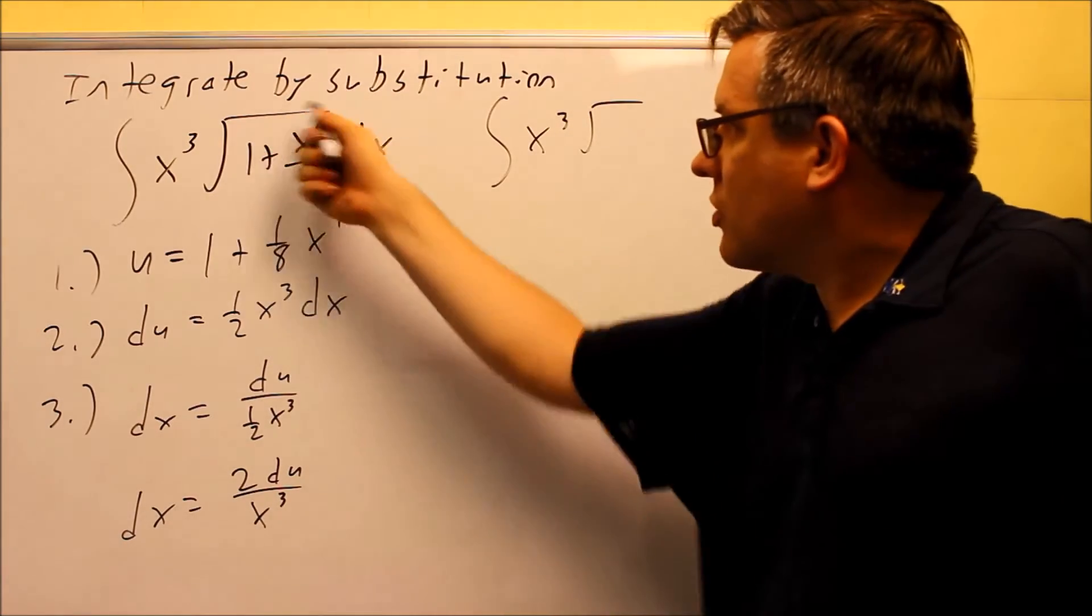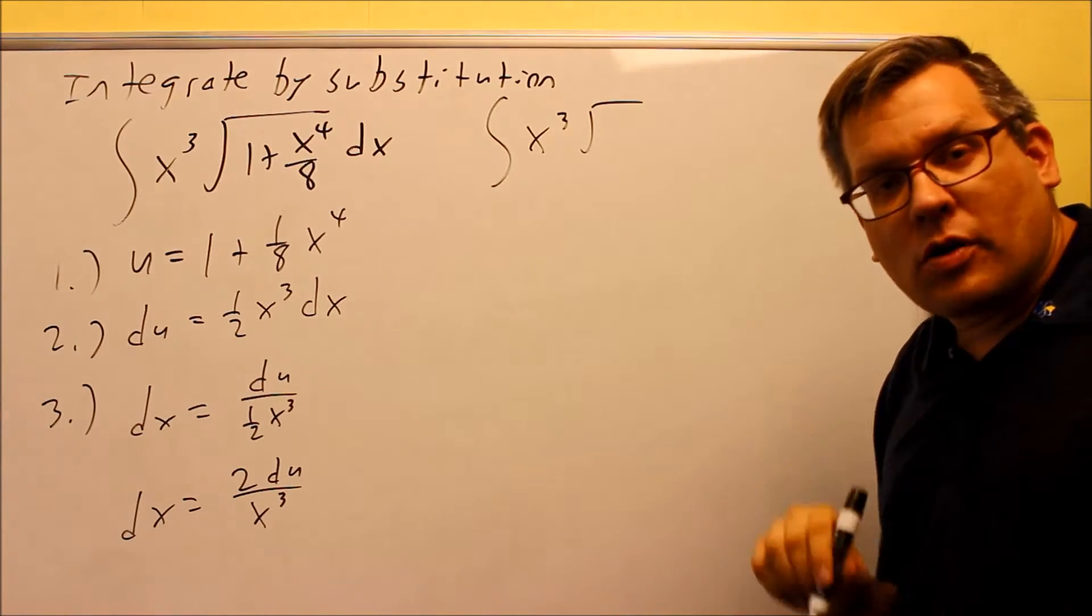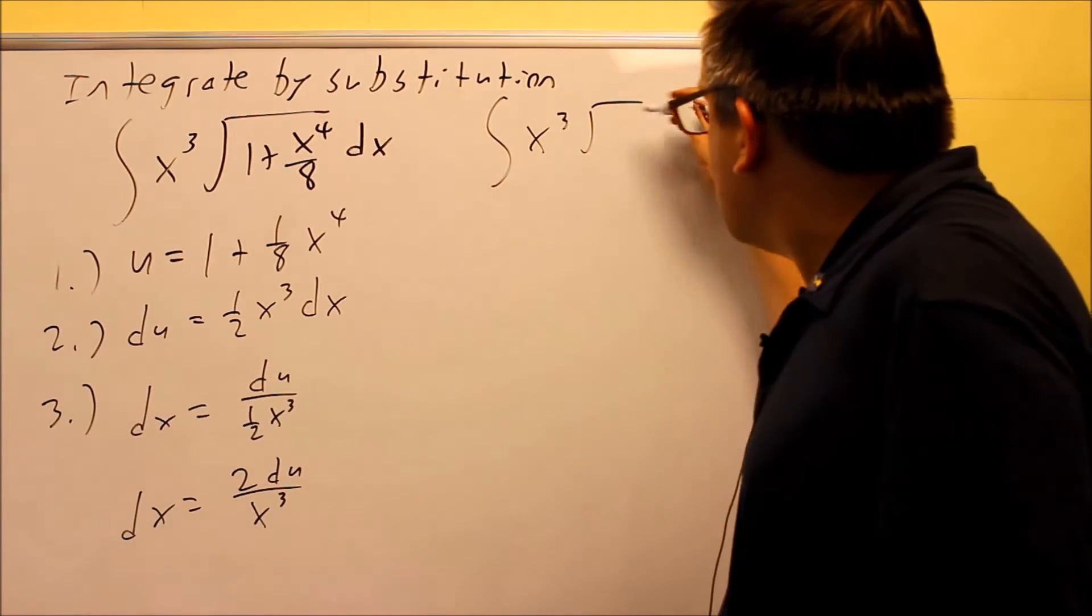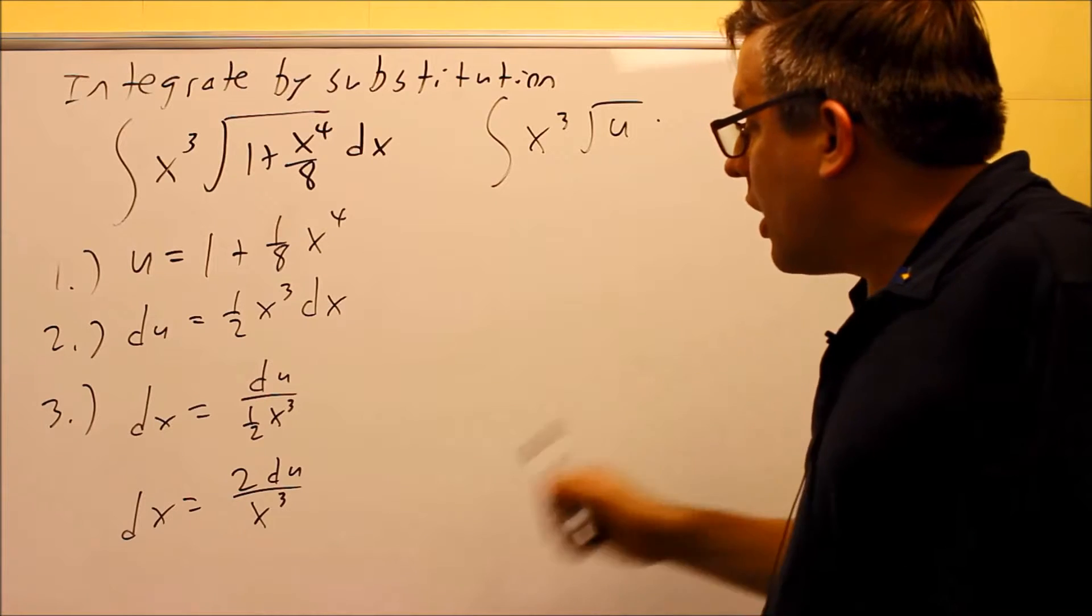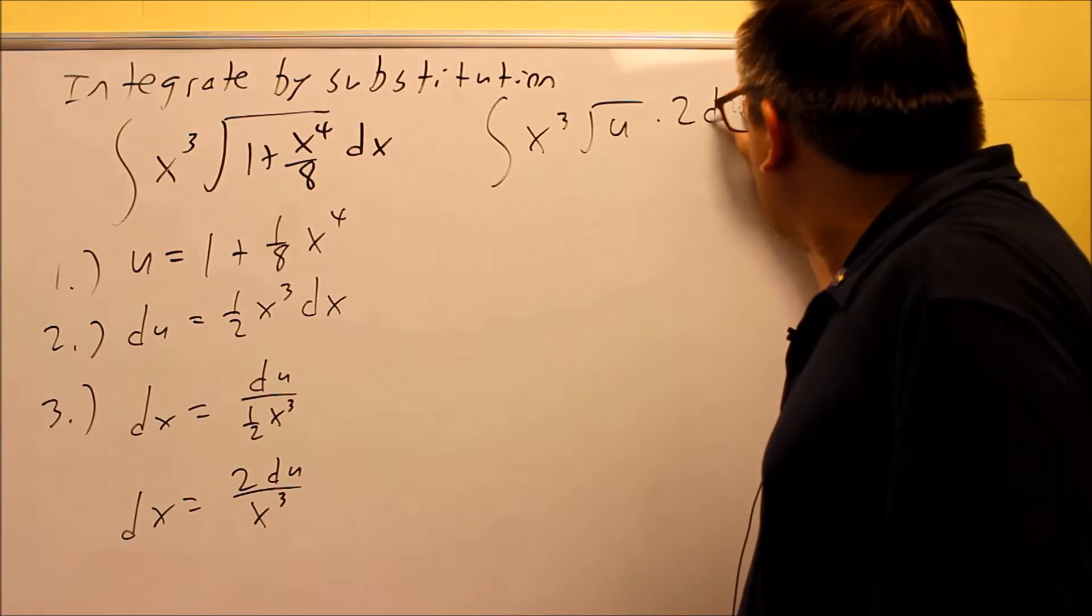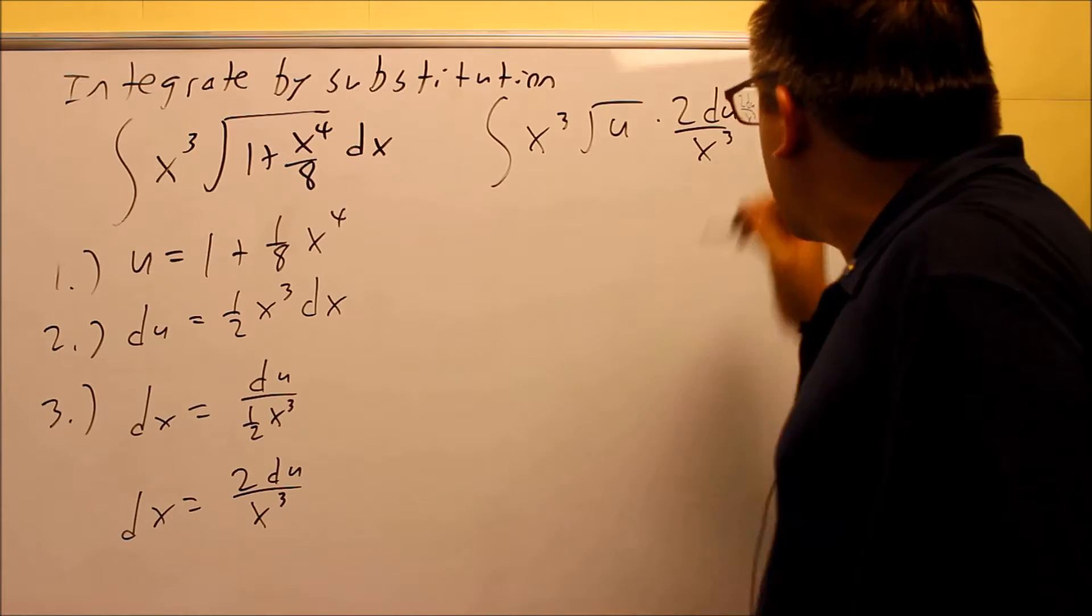the square root, we're going to replace all this inside the square root with u because that's what we made our substitution, that's what we said u is equal to, replace the dx with this, so I have 2 du over x cubed.